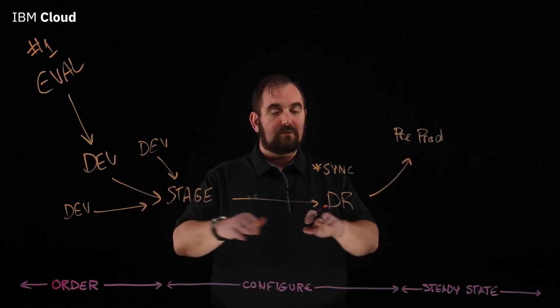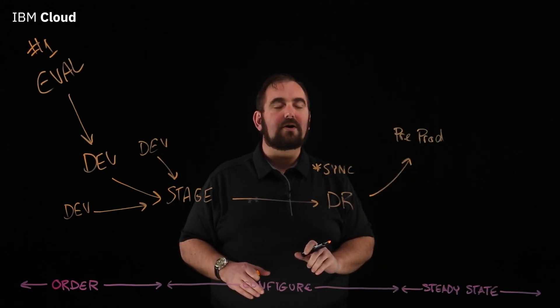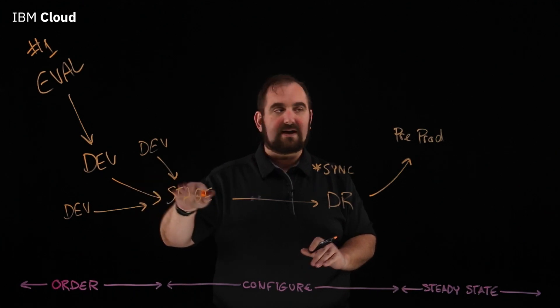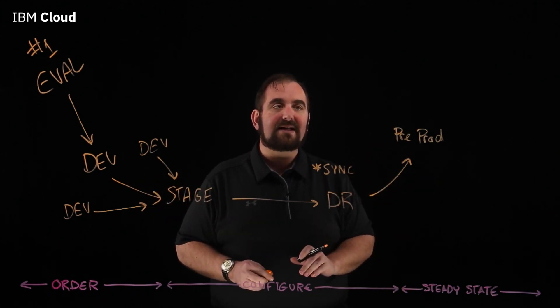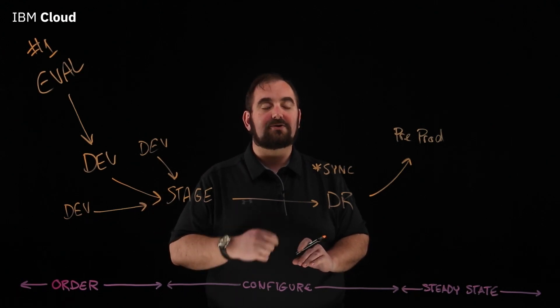But for now, we're going to stop in this DR environment, we're going to do some testing, and we're going to get pre-prod stable. We're going to get our DevOps path from dev to stage to pre-prod. We're going to get that solid. We're going to be sure that our release process is right. We're going to be sure that our change control is right.